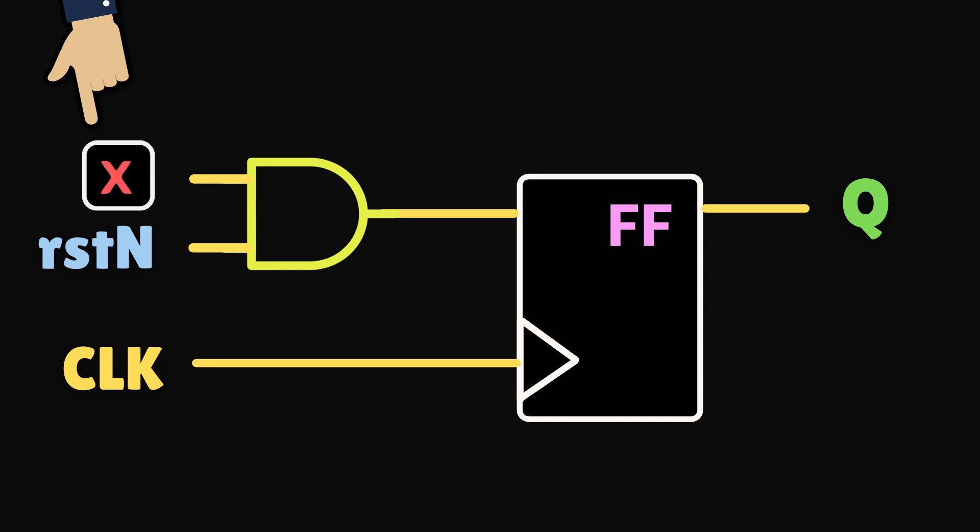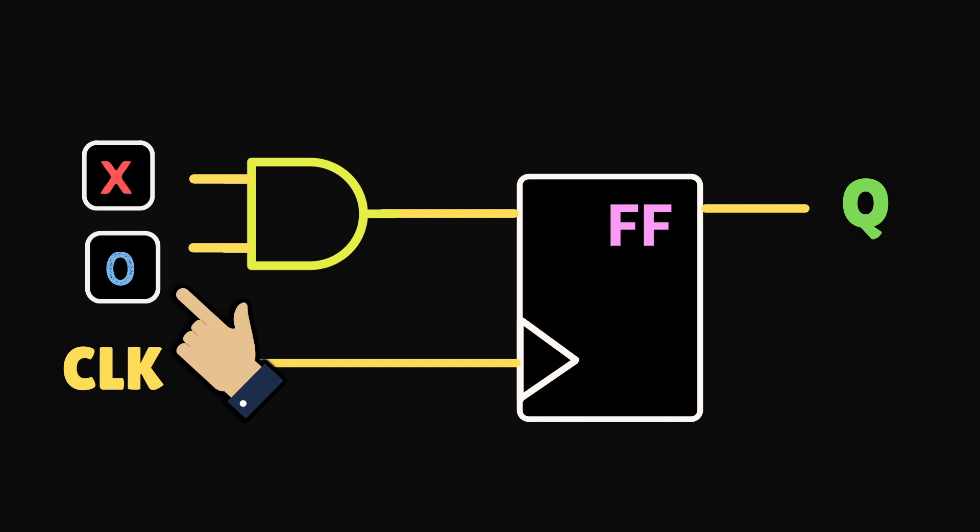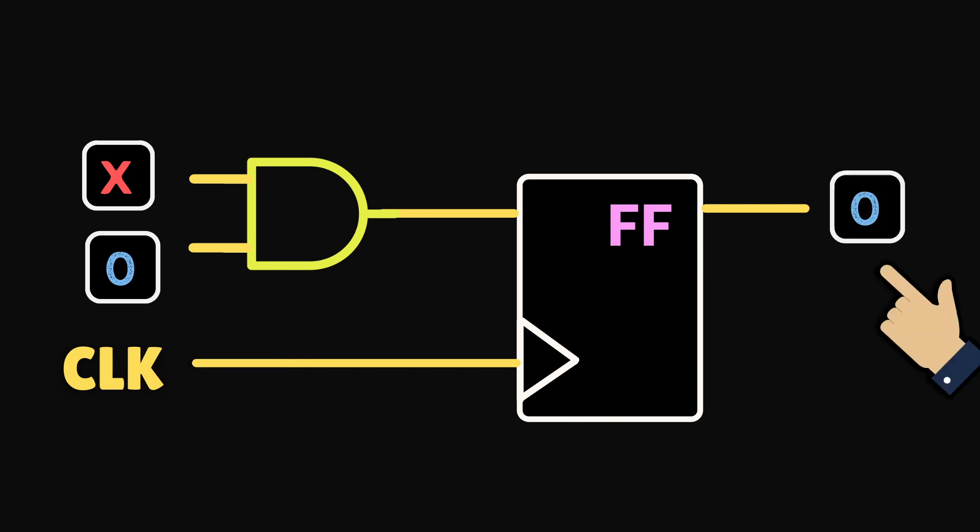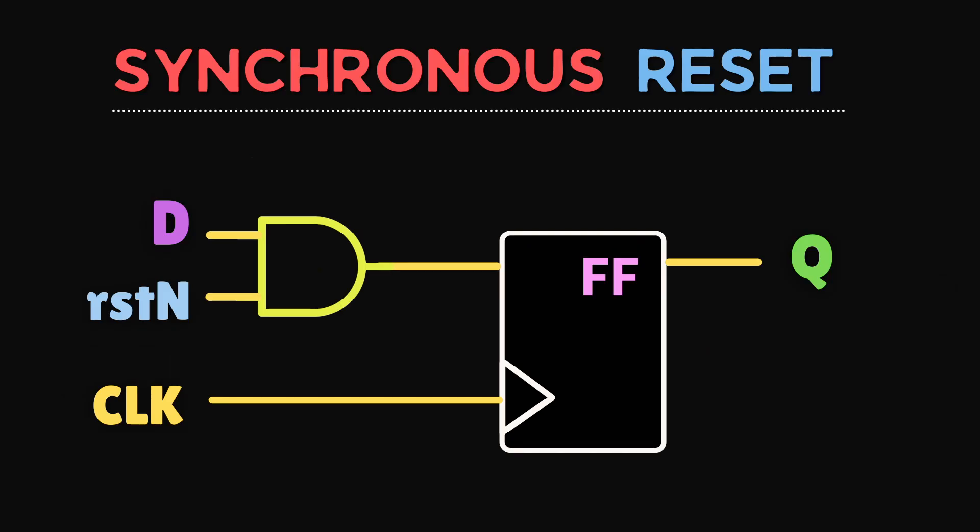If we apply reset, that is providing 0 to resetN, then the output at the AND gate will be 0 irrespective of D value. This circuit behaves in the same way in both silicon and simulation. That's a good thing.